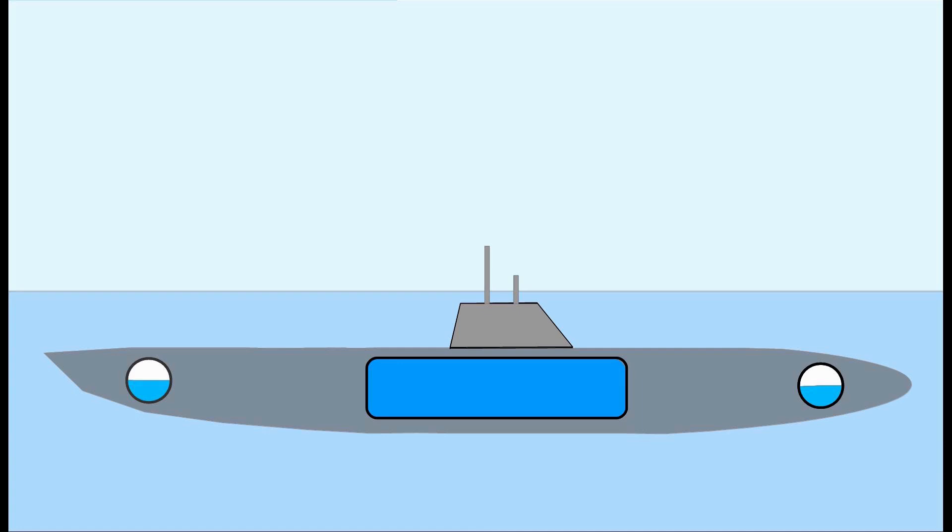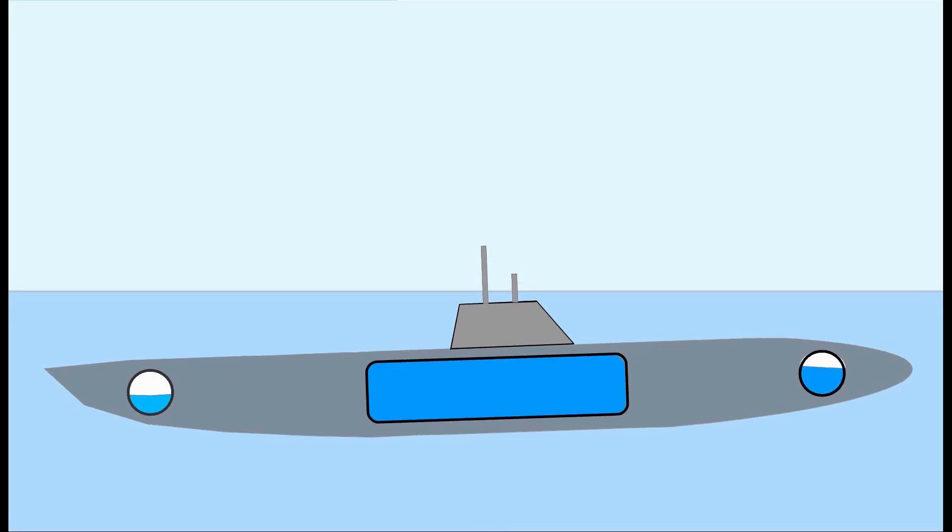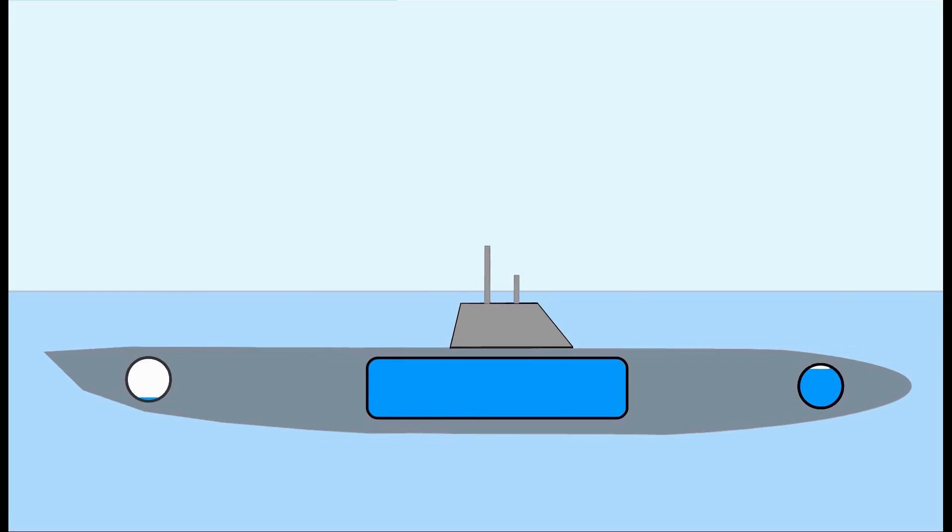Let's assume the front part of the submarine is heavier than its back. In that case, water from the front tank can be pumped to the tank in the back until the ship is in balance again. When the submarine is submerged, it can also use its diving planes to move up and down.